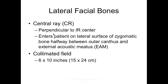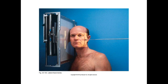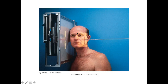The central ray is perpendicular to the IR, entering the patient on the lateral surface of the zygomatic bone, halfway between the outer canthus and the external acoustic meatus. We want to cover the frontal sinus — we want to see if there's any blood or air within the frontal sinus.